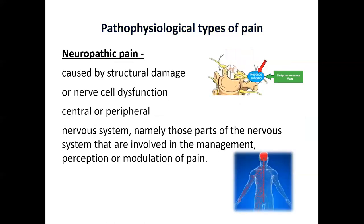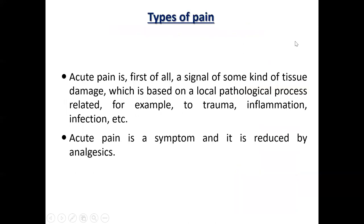Neuropathic pain is caused by structural damage or nerve cell dysfunction of the central or peripheral nervous system — specifically those parts involved in the management, perception, or modulation of pain. And there can also be a mixed type of pain, which includes a combination of any of these pain types.